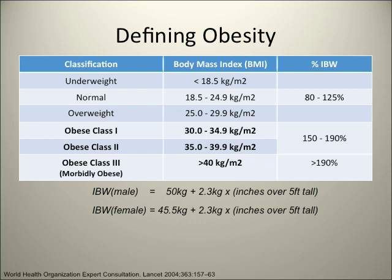Let's look into the definition of obesity. This is from the WHO. We consider a patient obese when the BMI is over 30. Obesity is classified as Class 1, Class 2, and Class 3. Class 3 is a BMI over 40 kg per meter squared, which is over 190% of the patient's ideal body weight, and Class 3 is considered morbidly obese.